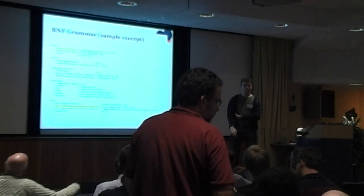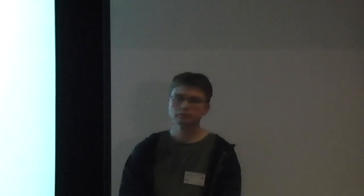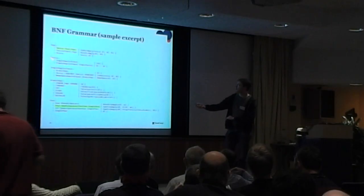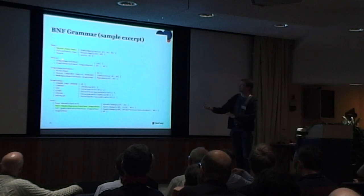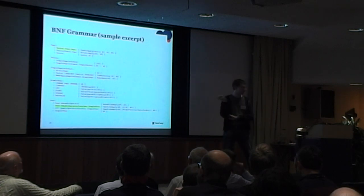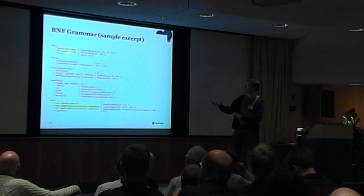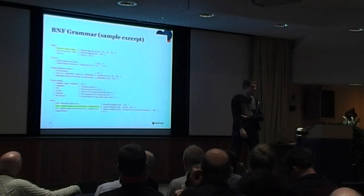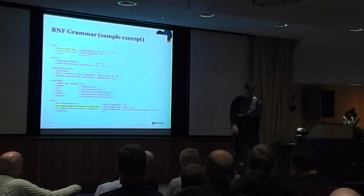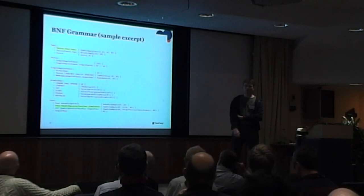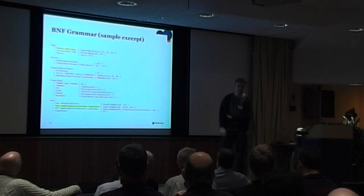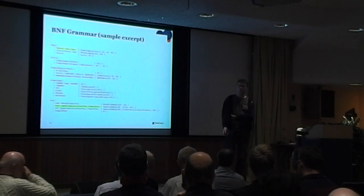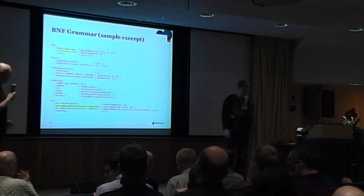The BNF grammar has around 400 productions — each line like the ones shown is a production, so it's roughly 400 lines of that specification. We're approaching lunch. If anyone wants to see a live demo, several of my SimCorp colleagues probably have a laptop and can do offline demos in the breaks. Thank you very much.